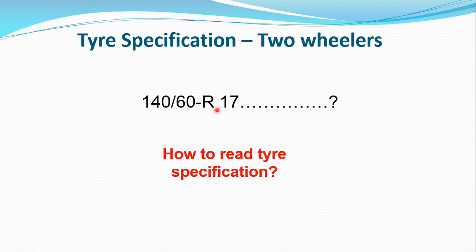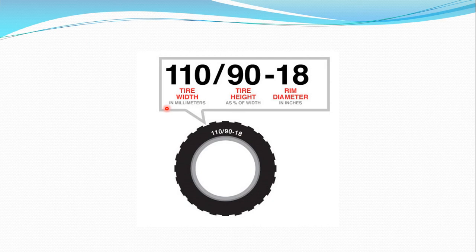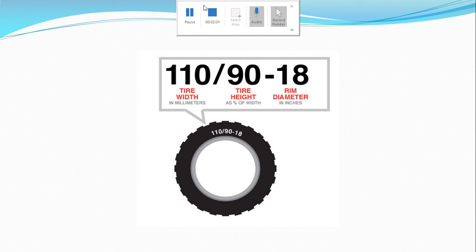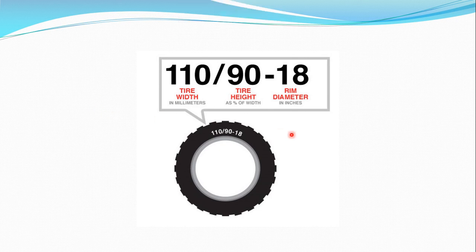For a two-wheeled vehicle, the coding is read in the same manner. The first term represents the tire width, the next represents the tire height as a percentage — that is the aspect ratio again — and the last number, such as 18, represents the rim diameter in inches.